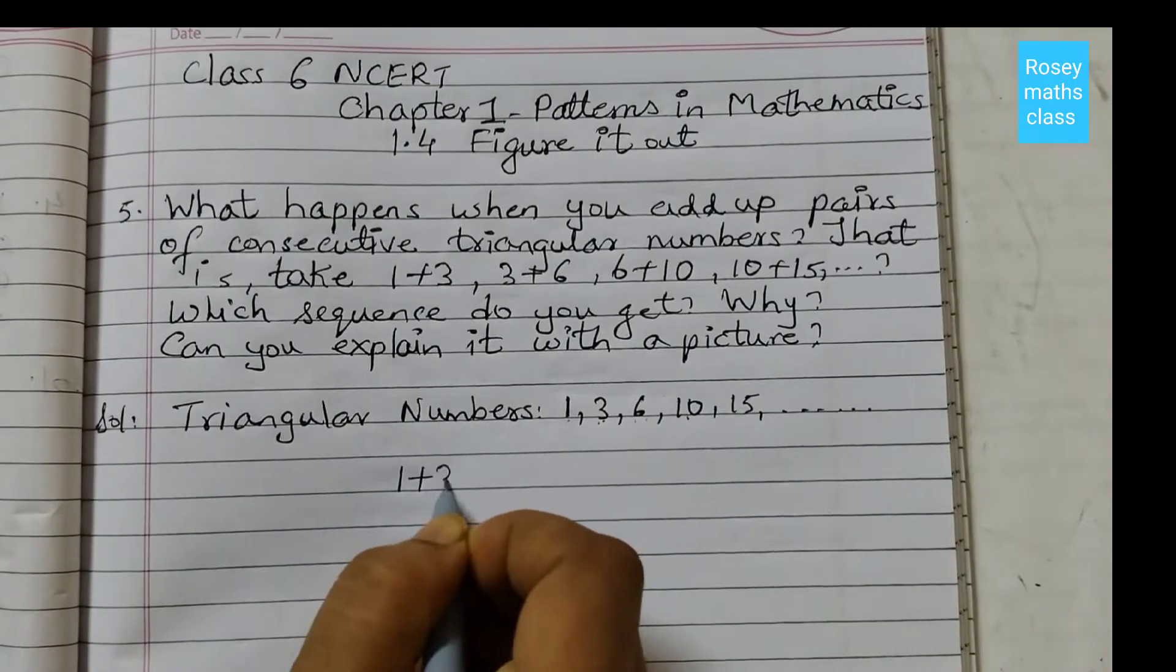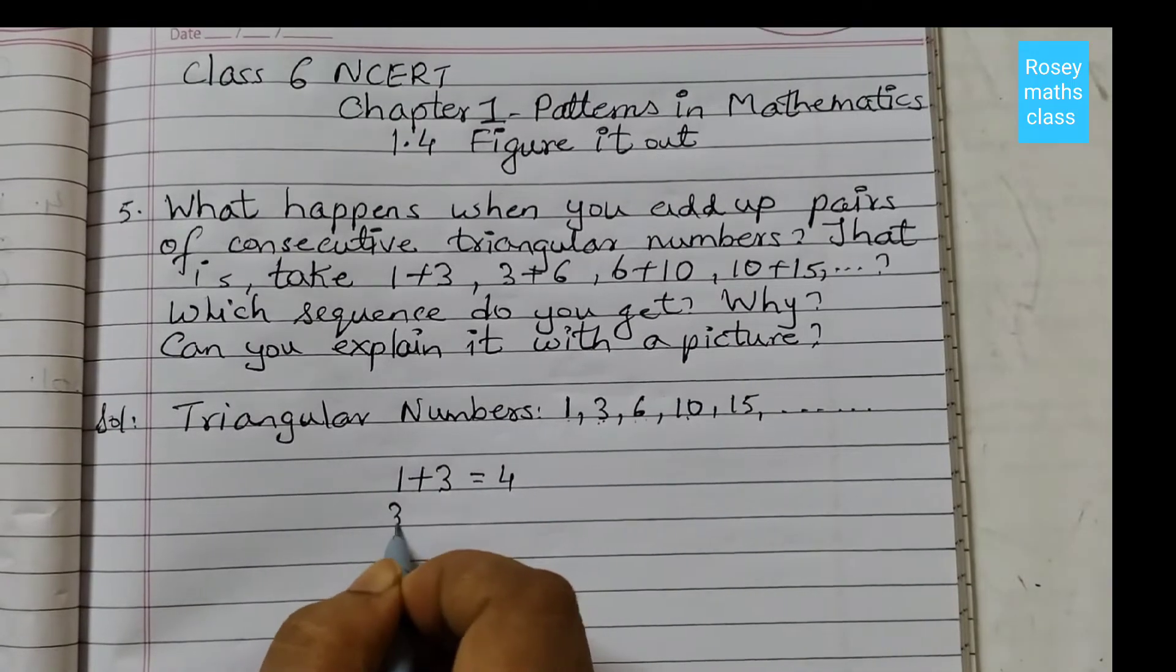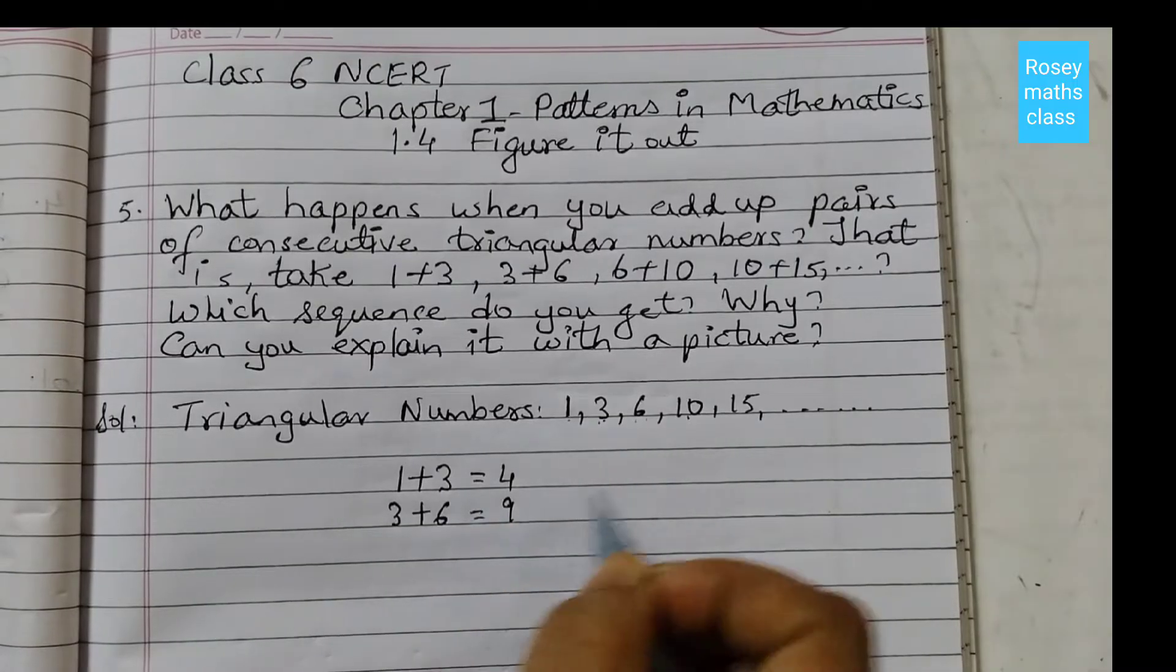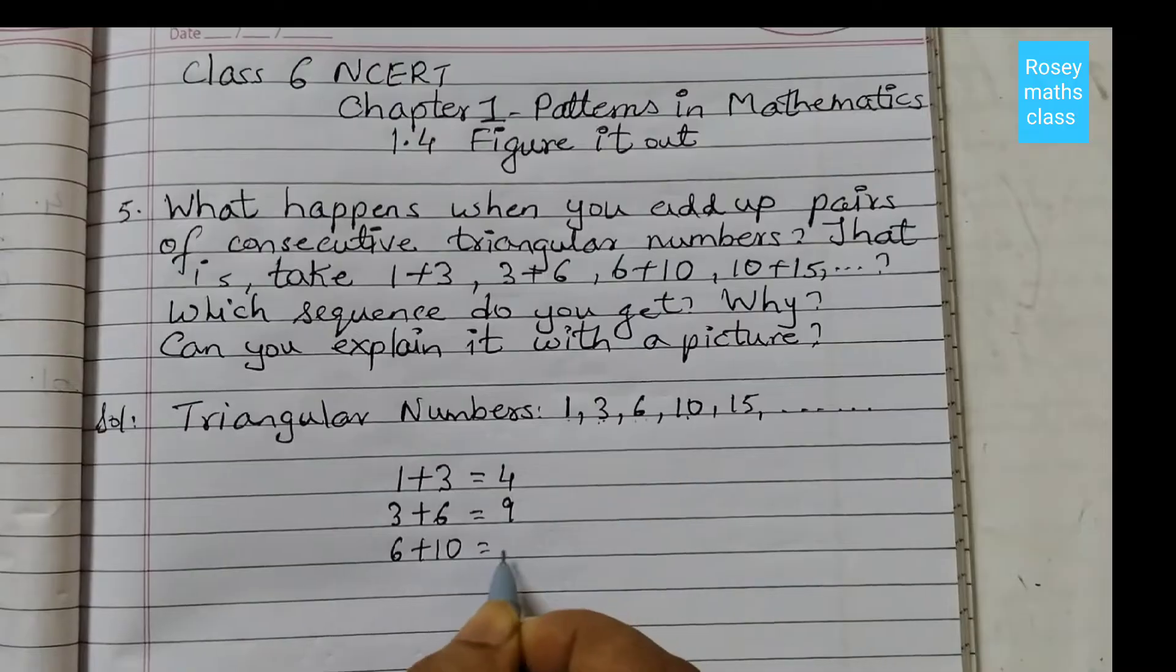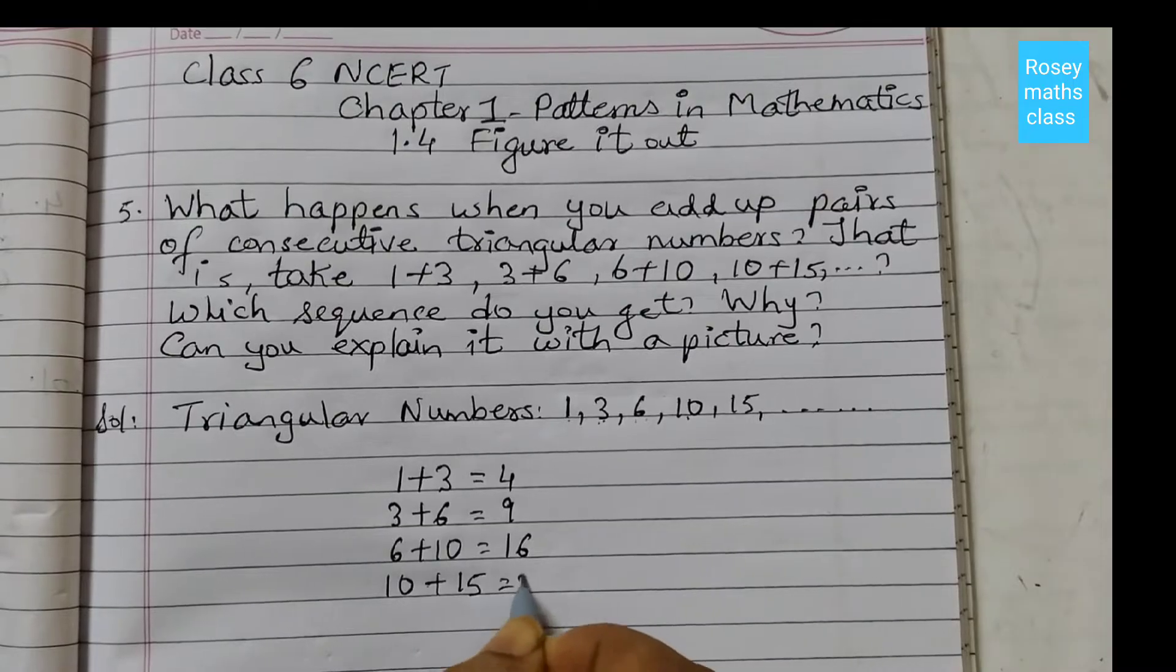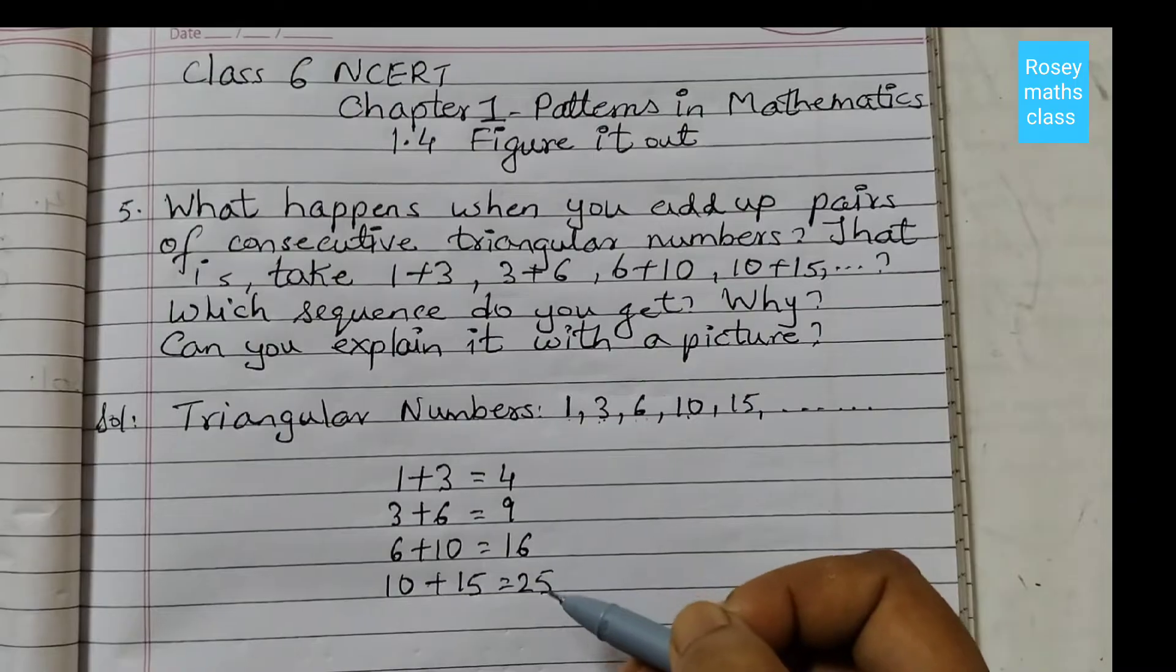1+3 equals to 4. Then 3+6, 3+6 is 9. 6+10, 6+10 is 16. Next 10+15 is 25. So do you see a pattern here that we have already learned before?